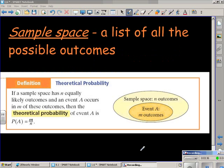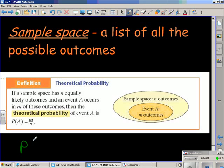Sample space is a list of all the possible outcomes and that is necessary when you're talking about theoretical probability. We'll learn later how to count sample spaces, but theoretical probability of event A is the probability of M over N, or the ratio of M over N. And M represents the successful outcomes or ways that you could win at a game. And N is the total number of outcomes.